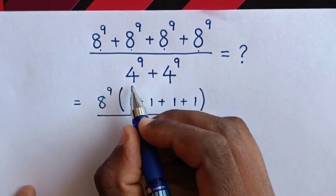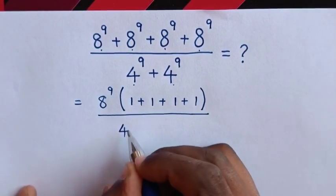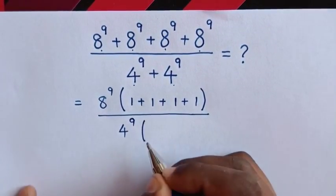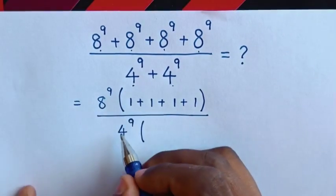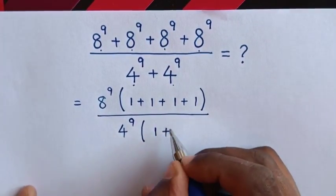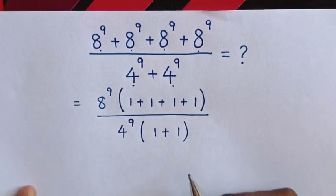Here in the denominator, 4 power 9 is common. So we write 4 power 9 out of bracket, then this divided by this is 1 plus this divided by this is 1 bracket.